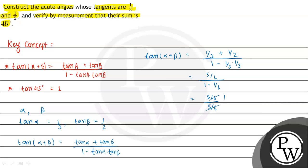Here we take the inverse. Alpha plus beta equals tan inverse of 1. The value of tan inverse 1 is pi by 4 radians.